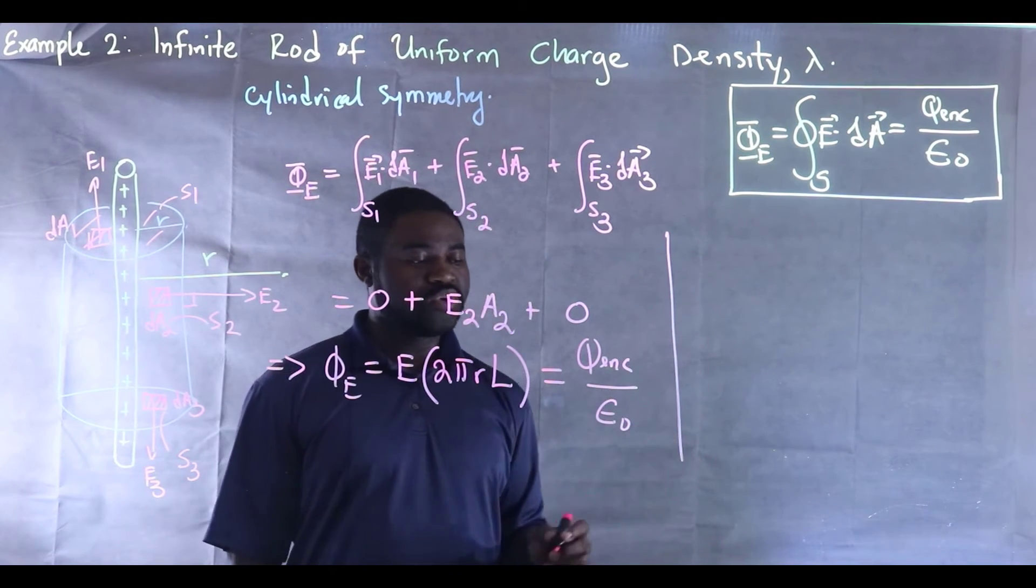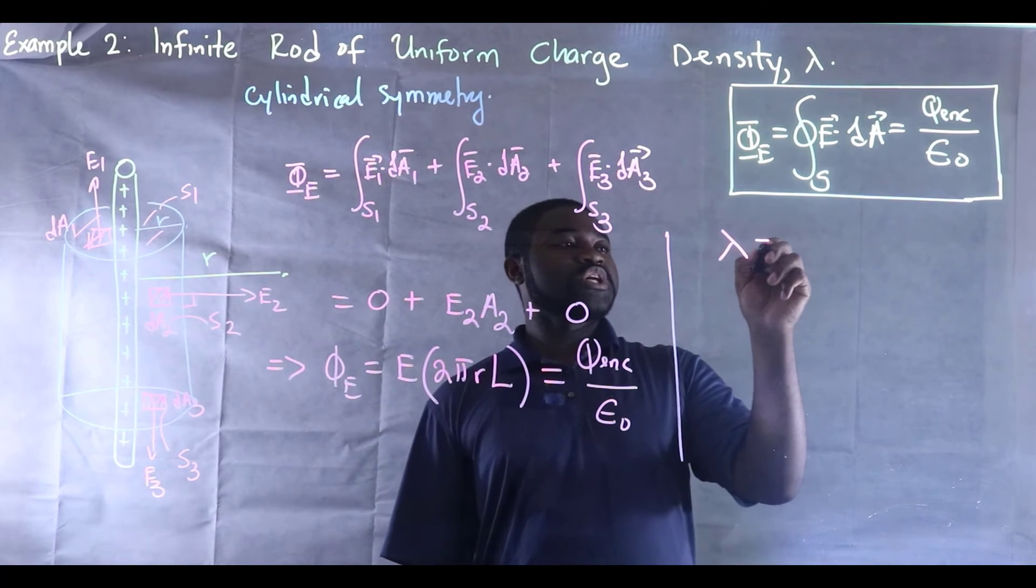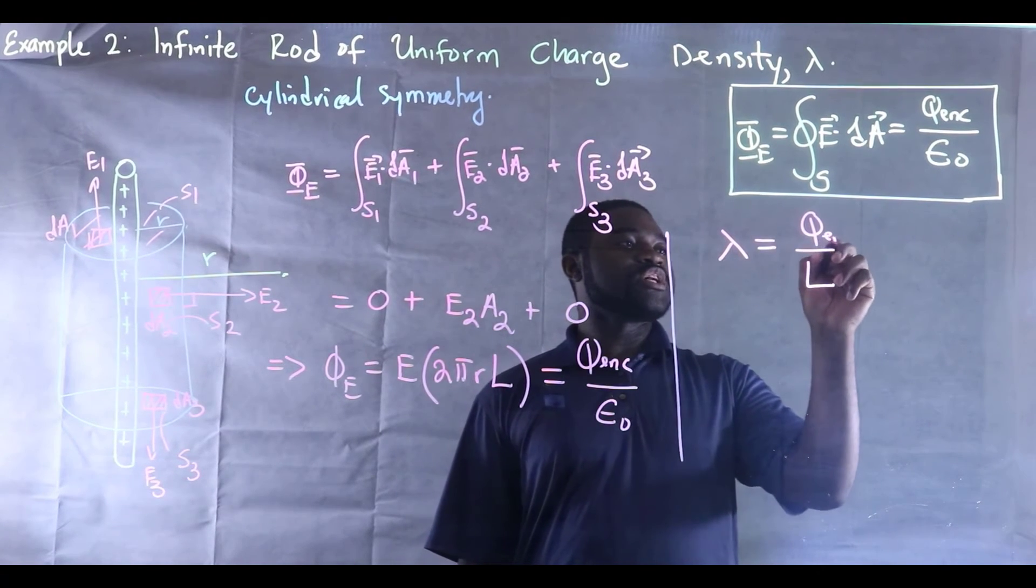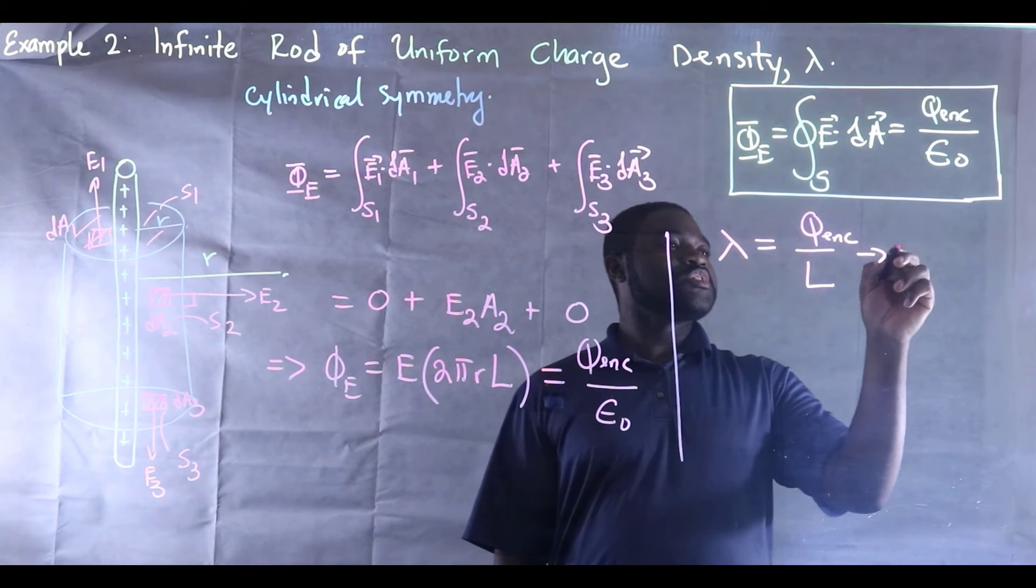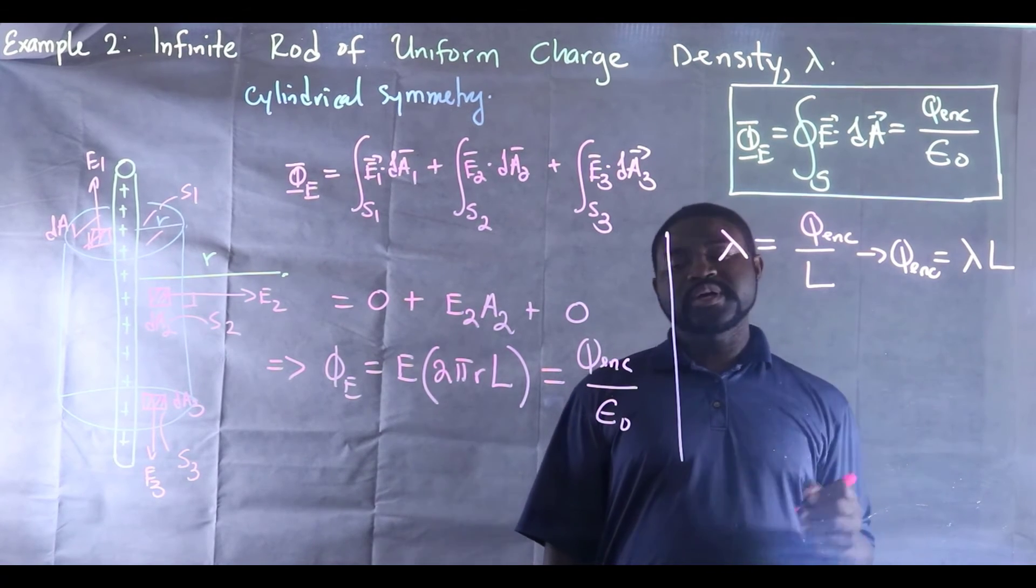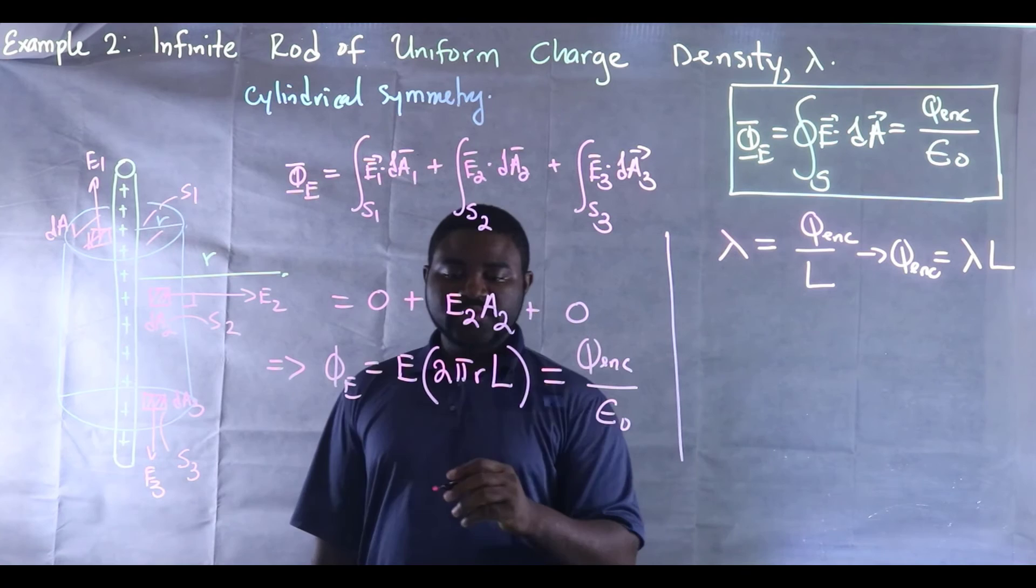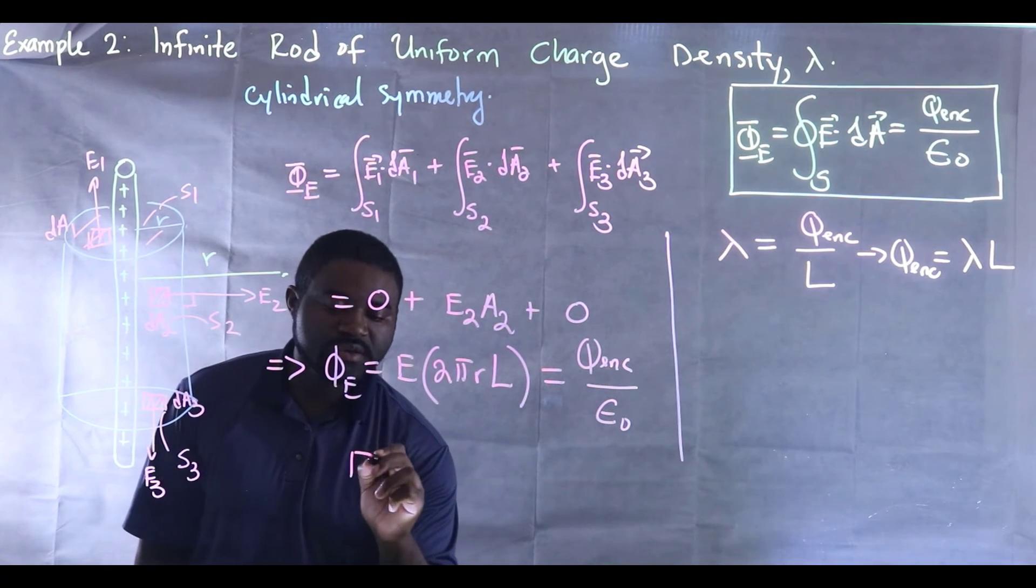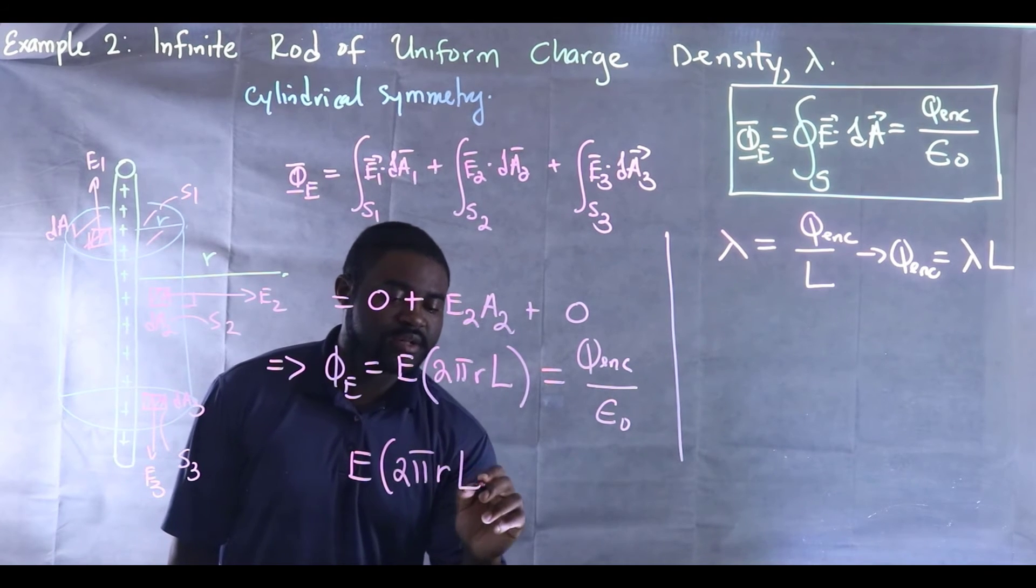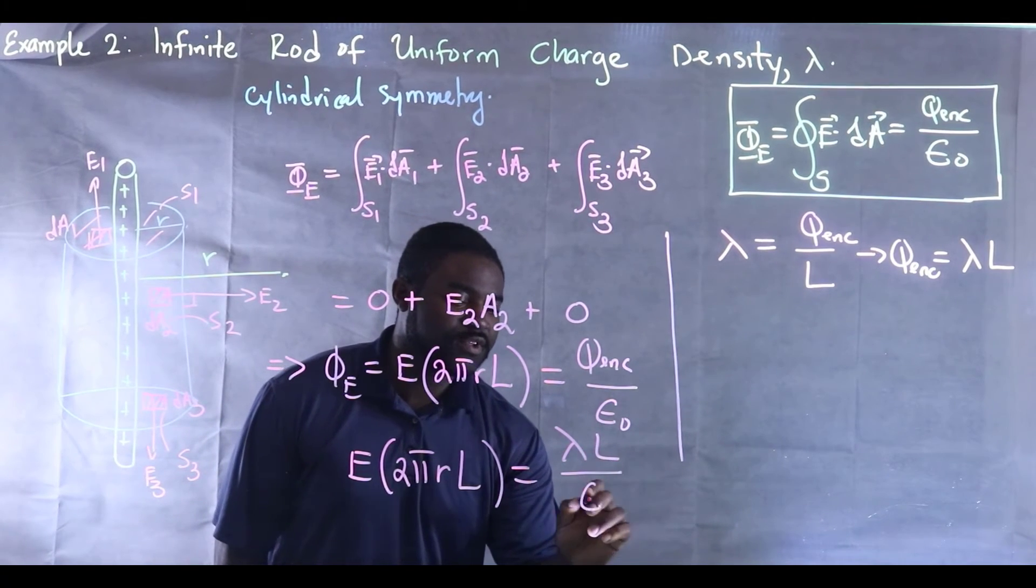Now this is an interesting problem. We know that lambda, which is the linear charge density, is equal to Q divided by L. This is the charge enclosed. This means that the charge enclosed is equal to lambda multiplied by L. Hence we can therefore see that E(2πRL) will be equal to λL divided by epsilon-not.